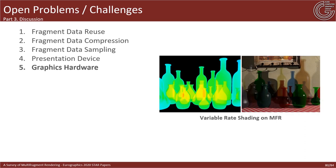Even though the rapid evolution of GPUs has greatly impacted multi-fragment processing capabilities — for example including atomic operations, dynamic memory allocation, and pixel synchronization — novel specialized modifications to the current hardware pipeline are essentially required to enable full hardware-accelerated support of k-buffer or A-buffer solutions on future GPUs. Some ideas here may include hardware-friendly MFR implementations or expanding variable rate shading to the depth domain.